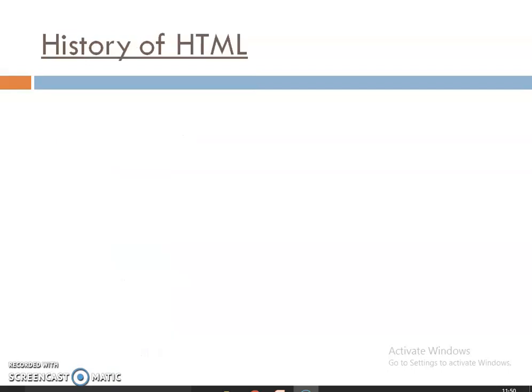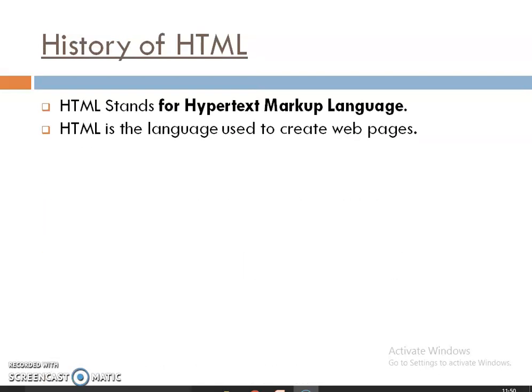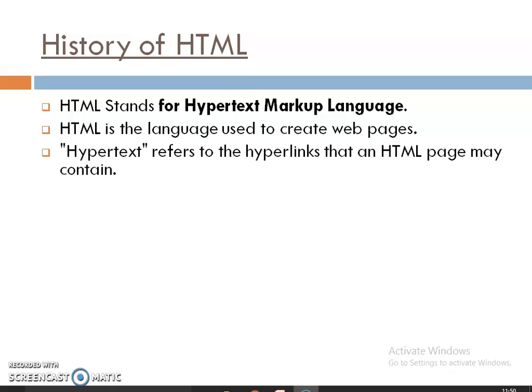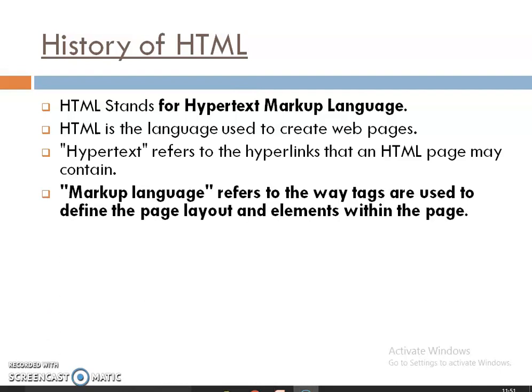First we will see about the history of HTML. HTML stands for Hypertext Markup Language, and this language is used to create web pages. Hypertext is referred to the hyperlink — we use one text to refer to a particular link, which is known as hypertext. Markup language is a language which defines the way tags are used to define the page layout elements within the page — all the tags used to develop or design the web page.